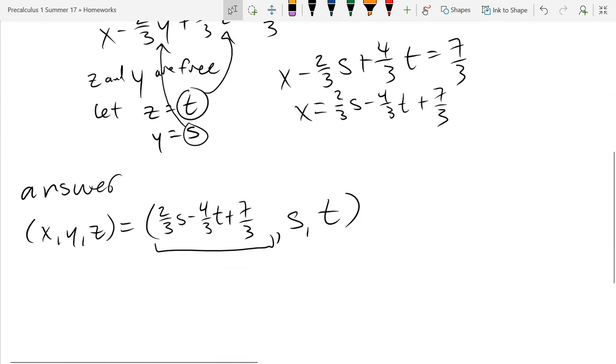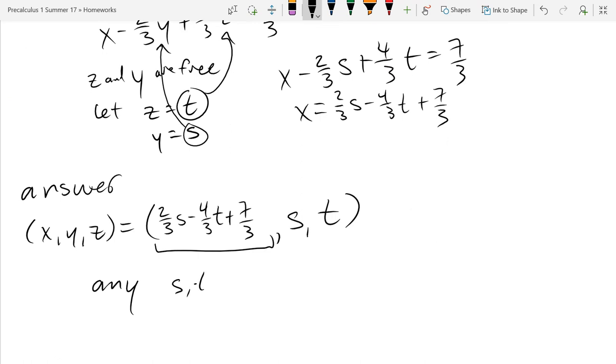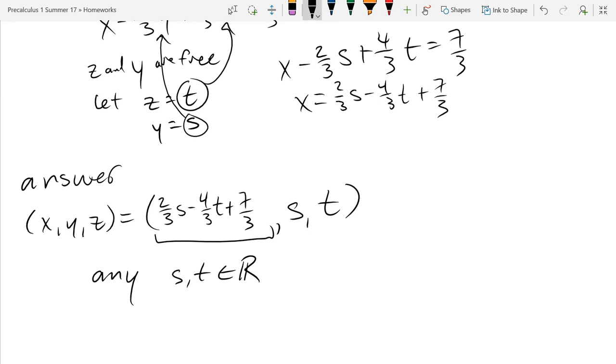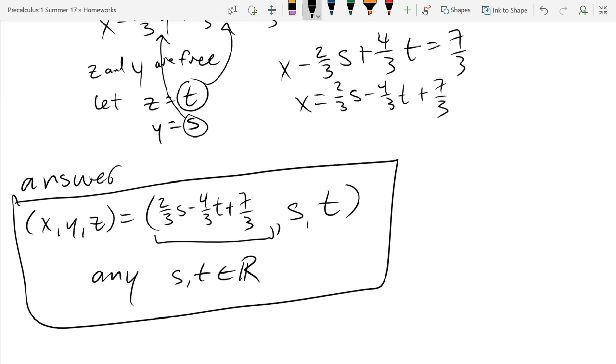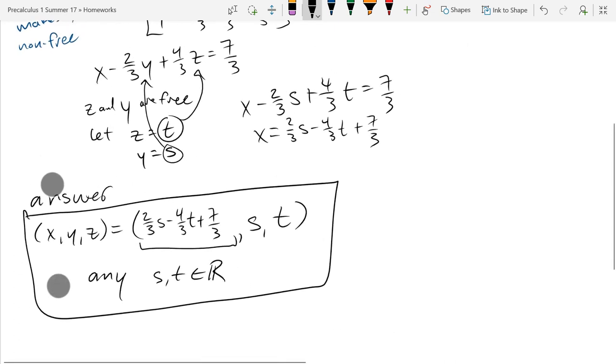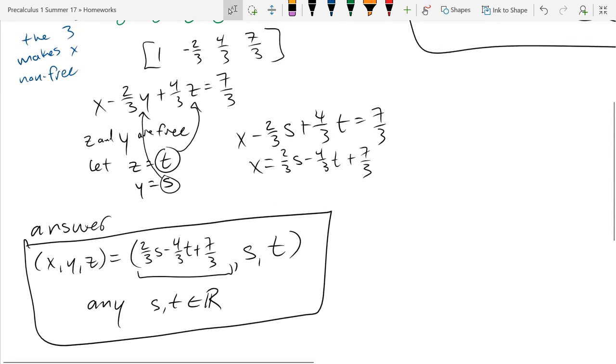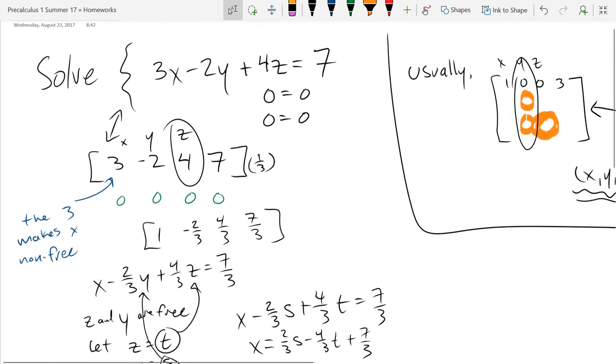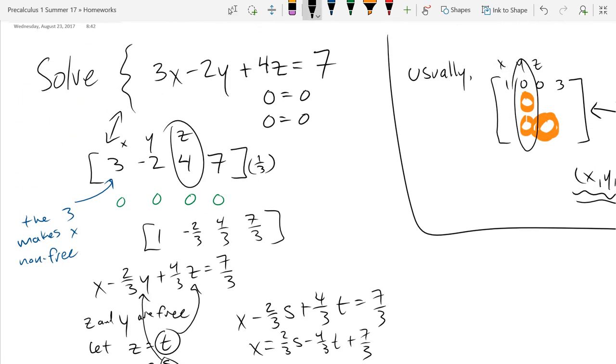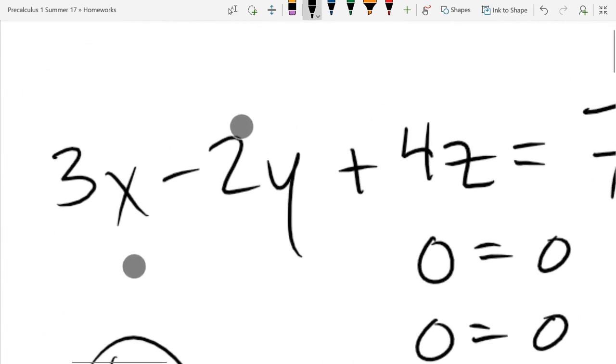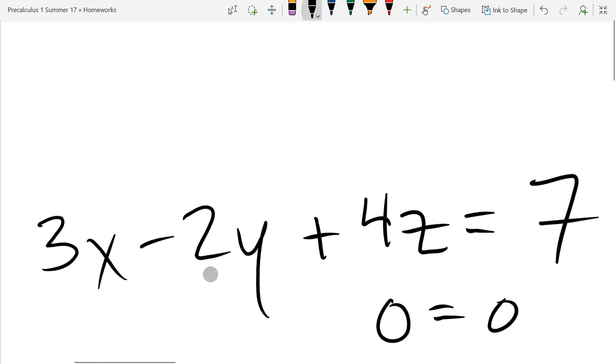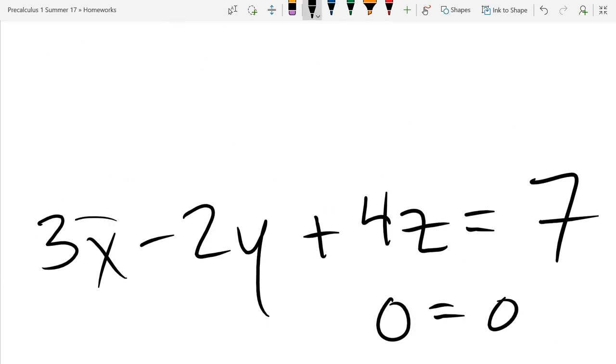So there is the answer written out in a point notation. And I don't think anywhere I wrote this, so any s and t in the real numbers. So that is what our answer looks like. So hopefully that will help you do problems where you have three dimensions but only one equation. You don't really need to write it in a matrix. You can really just, if you have one equation with three variables in it, basically you can just get to the step where you solve for x.